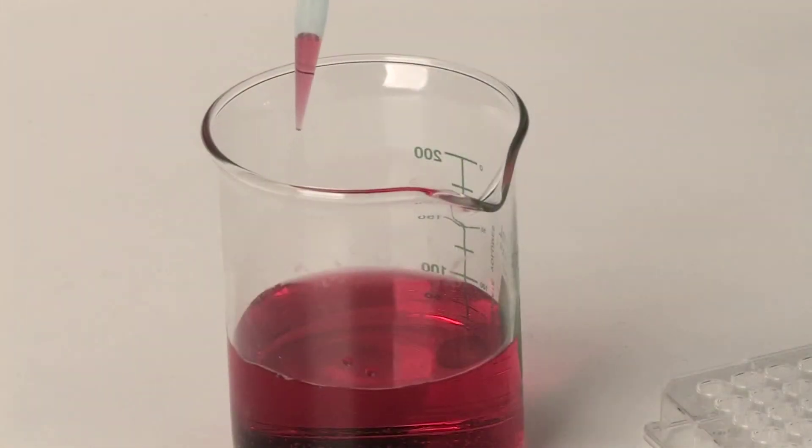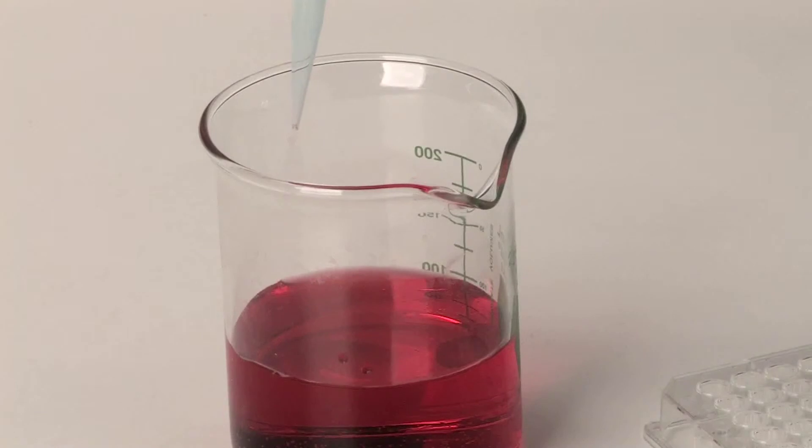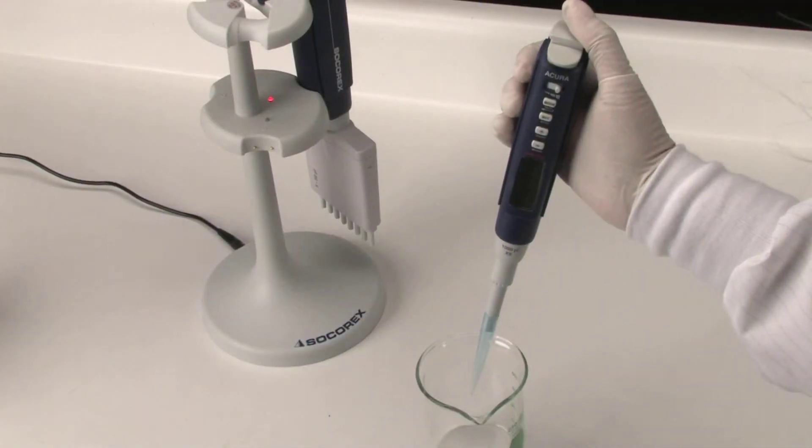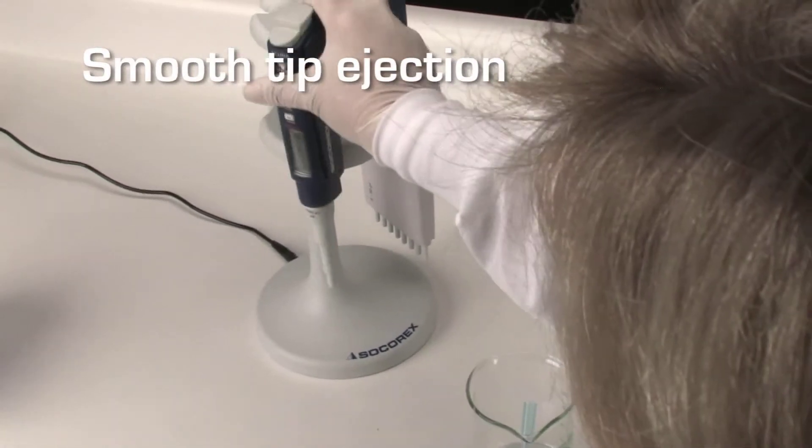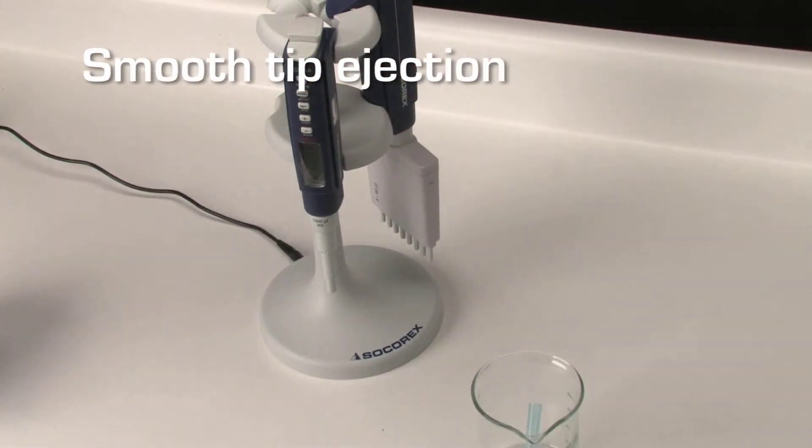Display shows purge. A double click expels the remaining liquid in the tip. Once dispensing is complete, the tip can be easily ejected by pressing the large, ergonomically located button.